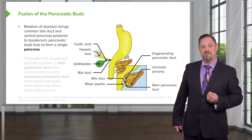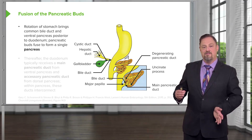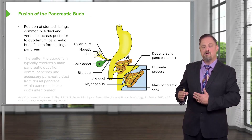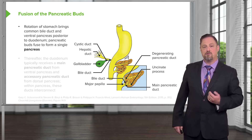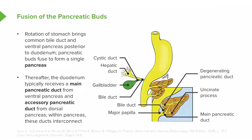By the time development is complete, the gallbladder is on the underside of the liver. The ventral pancreatic bud has swung posteriorly and fused with the dorsal pancreatic bud to form a single pancreas. The main pancreatic duct is the remnant of the drainage system of the ventral pancreatic bud, whereas the accessory pancreatic duct is what's left of the dorsal pancreatic bud's connection to the duodenum.